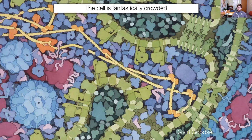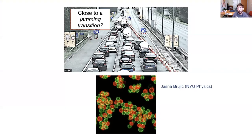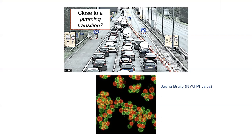What might some consequences of this crowding be? One very intuitive consequence is that you can drastically affect the ability of molecules, organelles, or complexes to move around inside this crowded environment. This is just like driving down the FDR — if they close one lane of the freeway, you get this very rapid nonlinear slowdown.